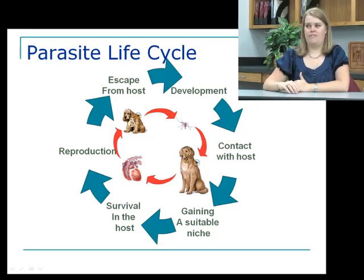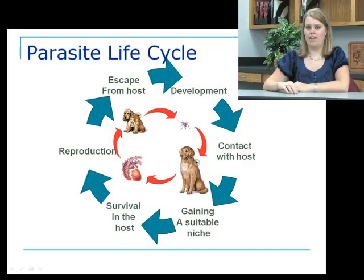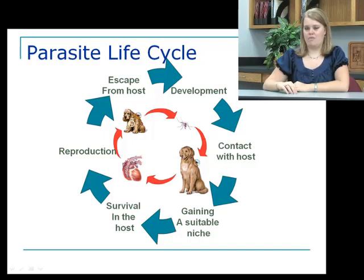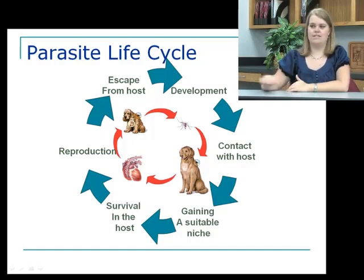Heartworms are unique because the mosquito actually transmits the heartworm to the dog through biting. Once inside the dog, they travel through the bloodstream into the heart, where they begin the survival phase and develop and mature. Once mature inside the heart, they begin reproduction. All parasites have some sort of reproductive product, whether it be larvae or an egg. Once they have the reproductive product, it has to be able to leave the host to infect new hosts. In the case of the heartworm, this is done by the larvae traveling through the blood, and when a mosquito bites and ingests blood, the life cycle begins all over again.